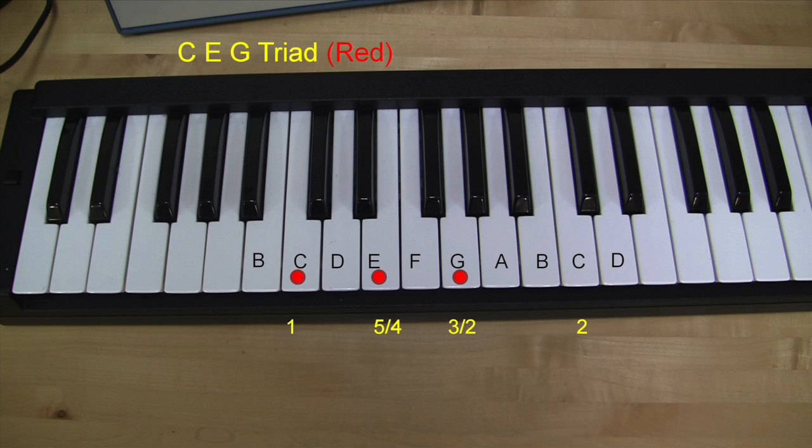For the first part of the lab, we will tune the keyboard to the just scale. We will do this by tuning the three triads, the first of which is C, E and G. This can be done by tuning the keys to the ratio 4x5x6.